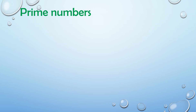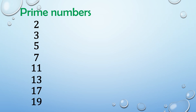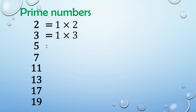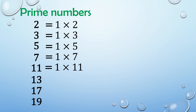Here are the list of prime numbers less than 20. We have 2, 3, 5, 7, 11, 13, 17, and 19. Now let's get the factors of each prime number. Starting from 2, we have 1 and 2. The factors of 3 are 1 and 3. The factors of 5 are 1 and 5. The factors of 7 are 1 and 7. The factors of 11 are 1 and 11. The factors of 13 are 1 and 13. The factors of 17 are 1 and 17. The factors of 19 are 1 and 19.